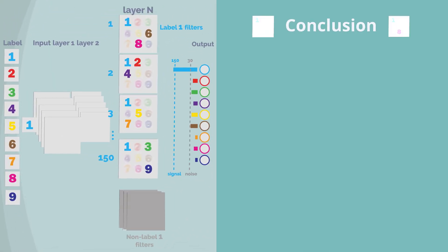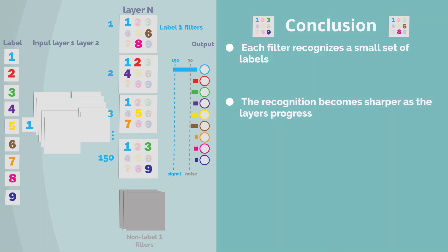In conclusion, each filter recognizes a small set of labels. The recognition becomes sharper as the layers progress. This is the underlying mechanism of successful deep learning.